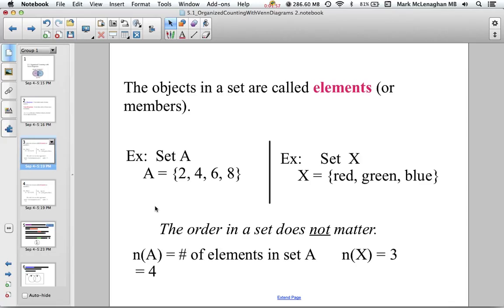Another set is set X: {red, green, blue}. It could have letters, it could have numbers, it could have words. It doesn't really matter as long as it has some sort of common characteristic, and we can call it a set.